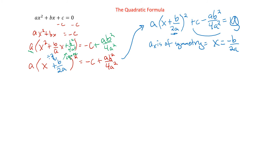When there are numbers it's a little bit prettier, but we don't have numbers in this one — we just have a, b, and c, so it's a little ugly. Back to solving for x. We have a times this whole thing squared equals negative c plus ab squared over 4a squared. To solve for x, we're going to divide by a, so we get x plus b over 2a squared equals negative c over a plus b squared over 4a squared.